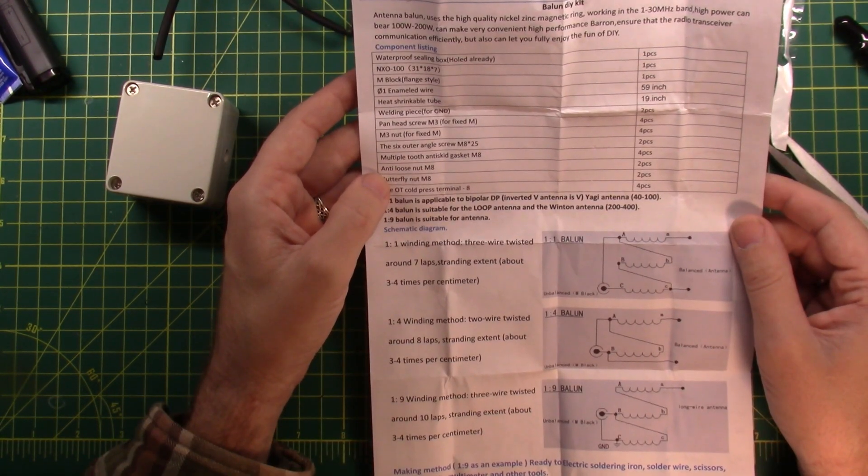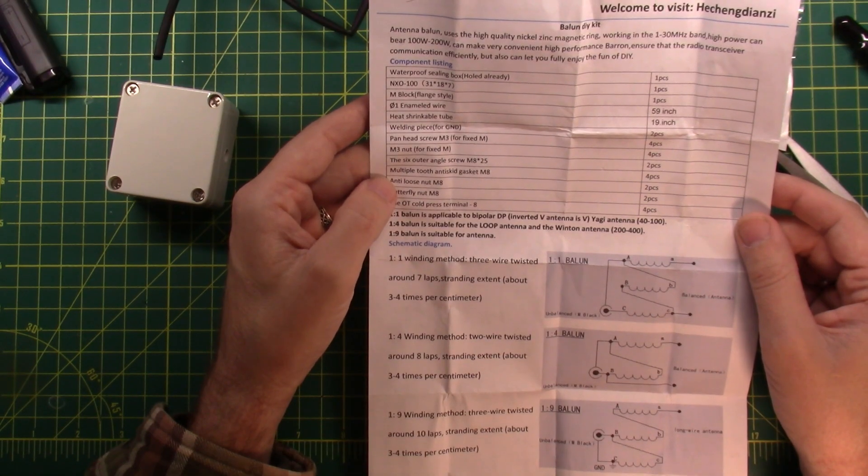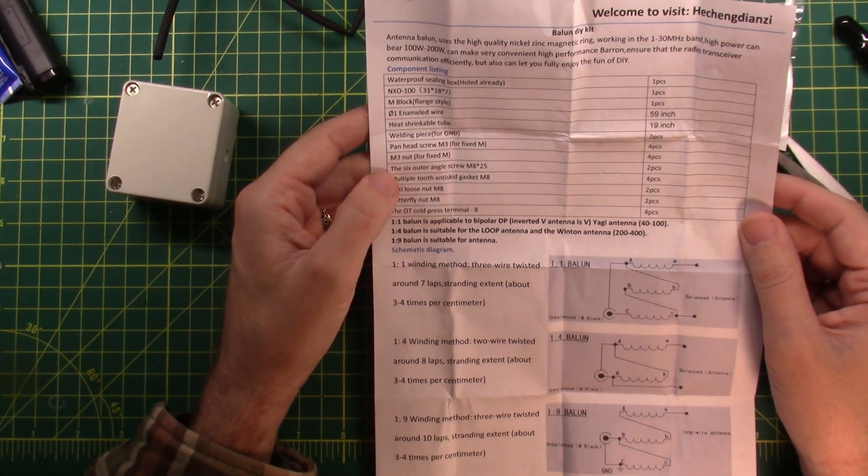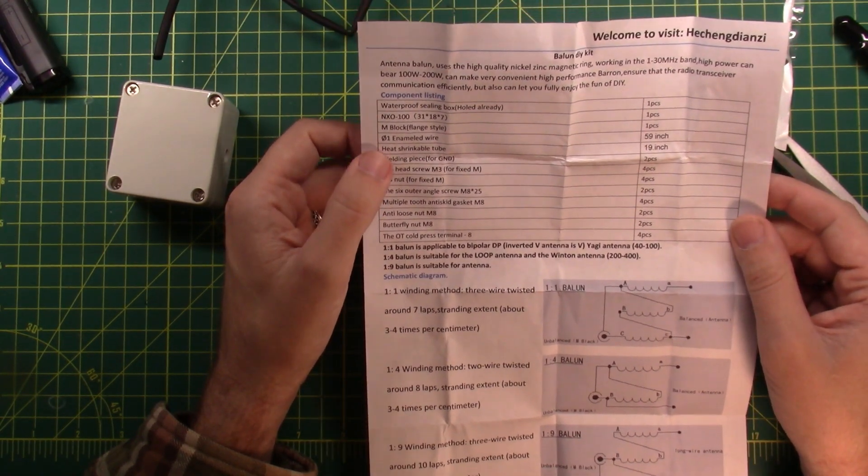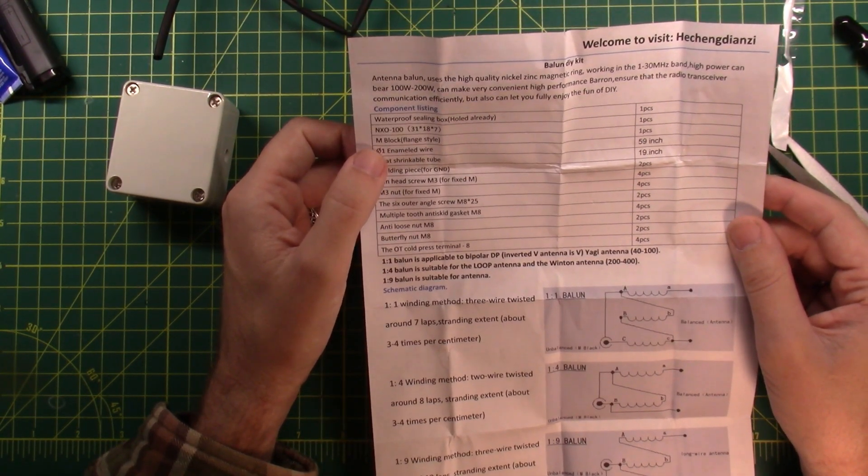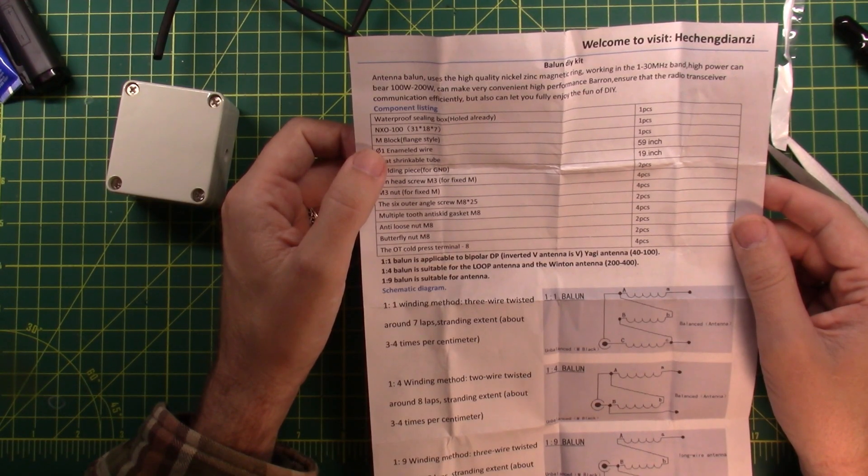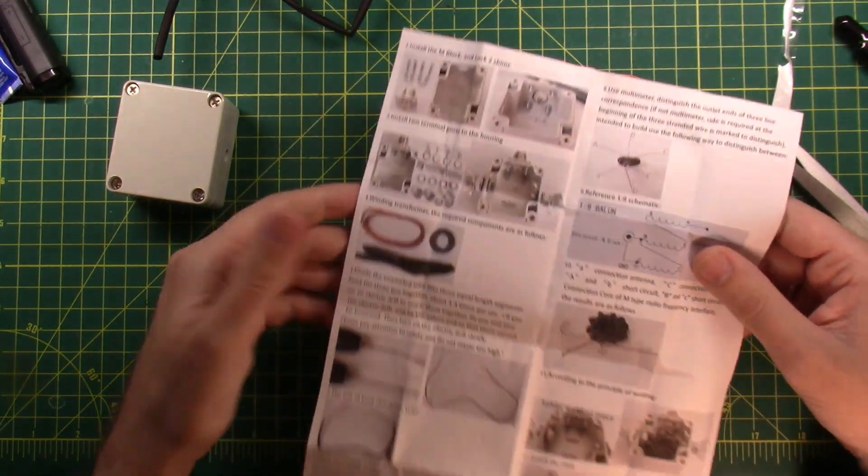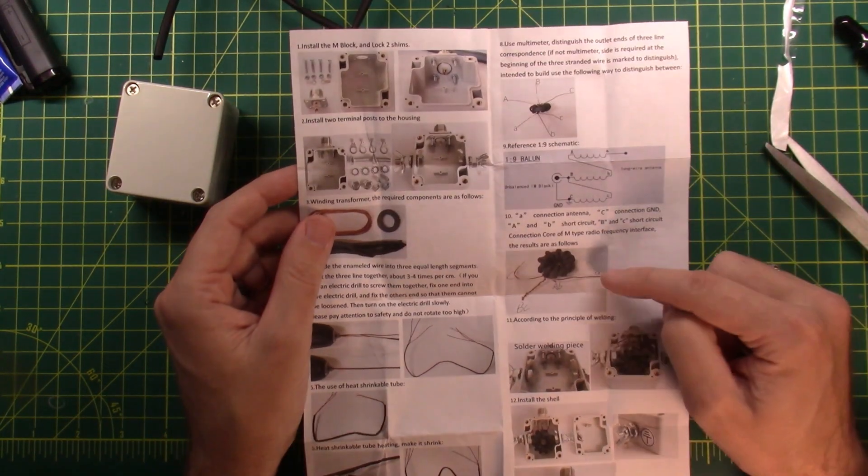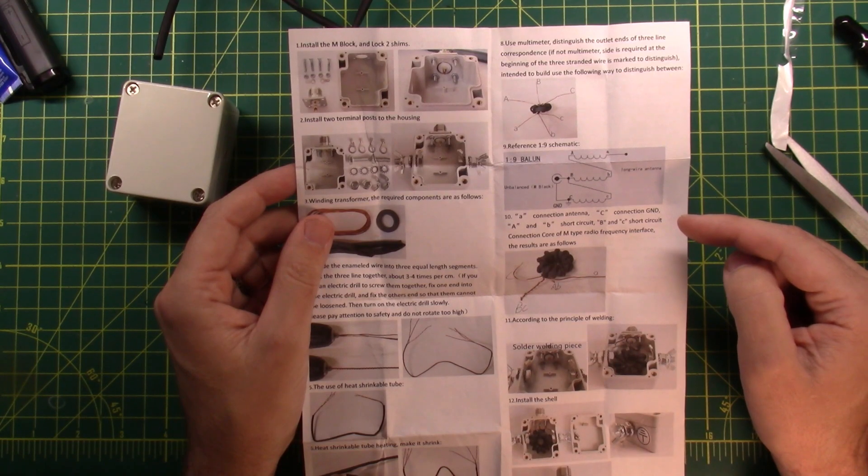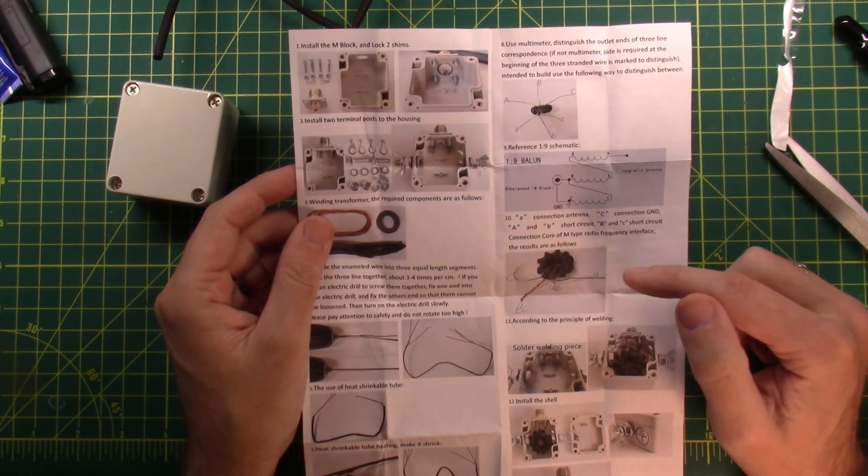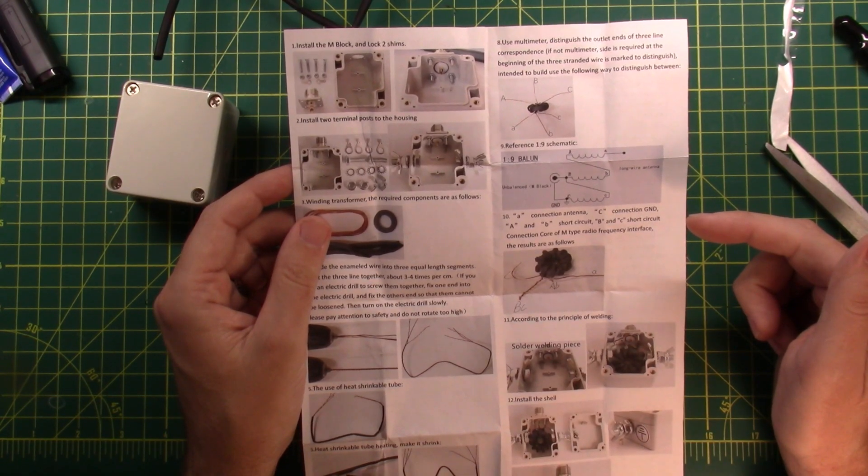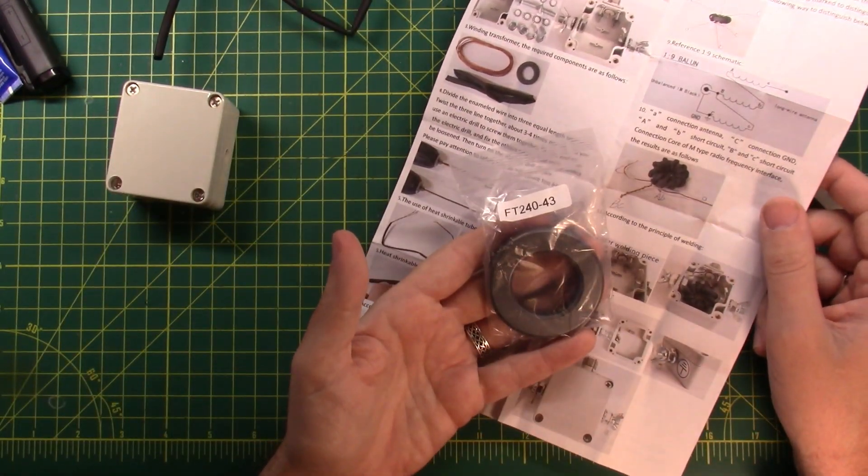Butterfly nut, anti-loose nut, multiple tooth anti-skid gasket, the six outer angle screw, welding piece for ground, heat shrink tubing, enamel wire, M-block. Yeah, it doesn't say anything at all about what the toroid is. All right, here's some instructions on the back. Okay, so there's a little bit better diagram of the winding method for the nine-to-one, so you might be able to sort of suss that out as you go.